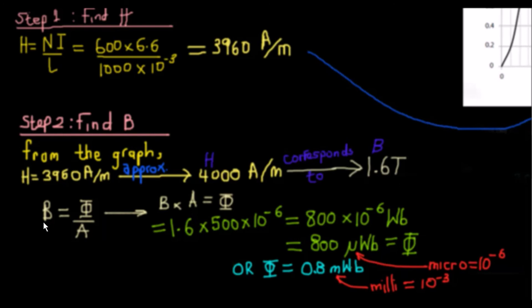Now the formula that we have here is B, the flux density, and the flux density is flux divided by area. So if we rearrange this, we bring the A up here, we cross multiply, we get flux density B times A is flux.